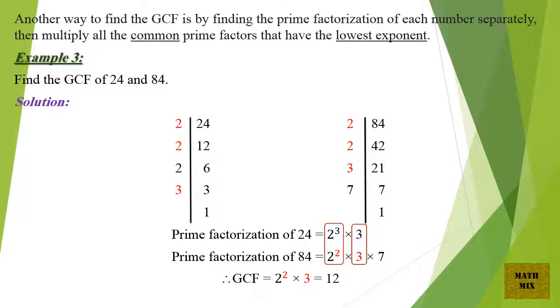And the prime factorization of 84 equals 2 squared times 3 times 7. Therefore, GCF equals 2 squared times 3 which equals 12.